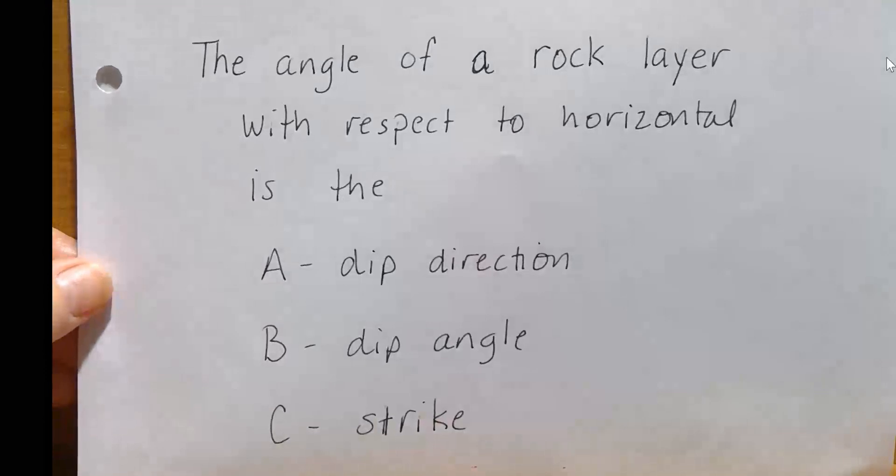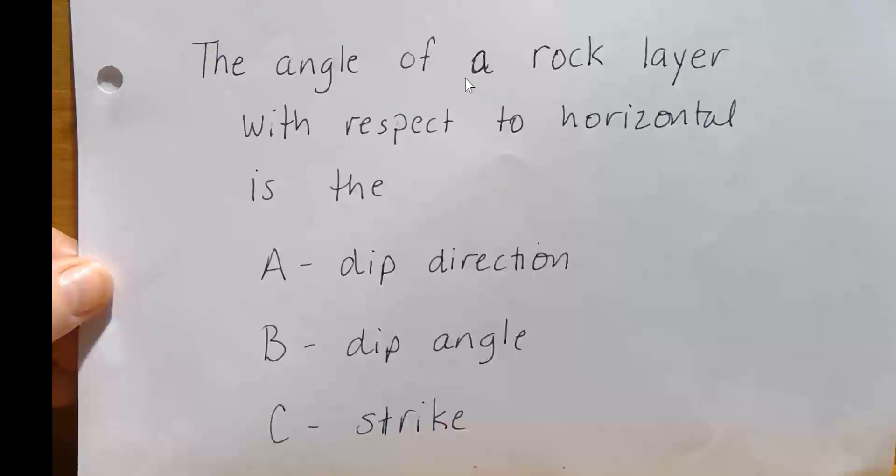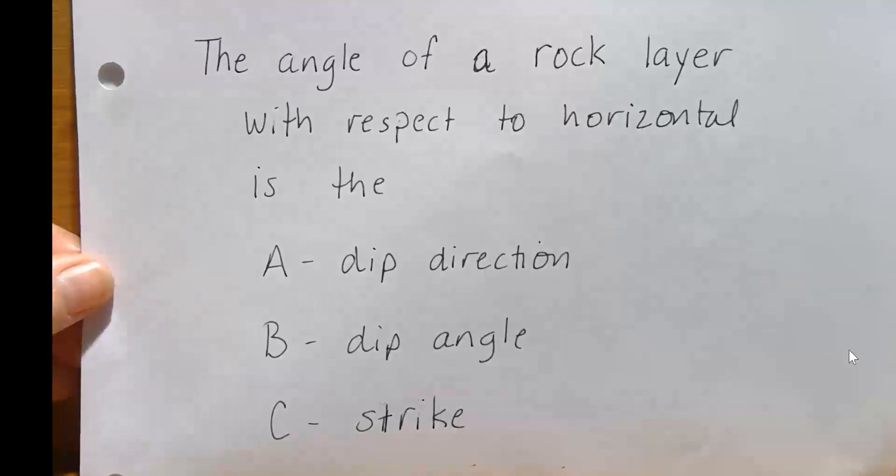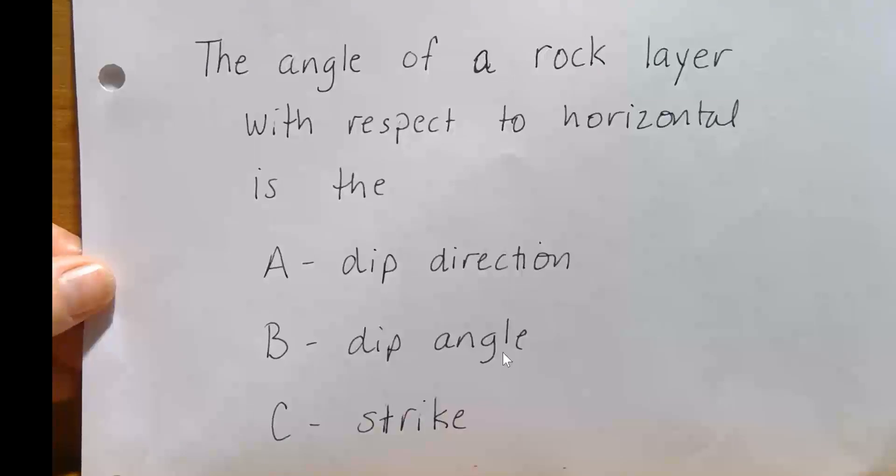Let's try this one. It says the angle of a rock layer with respect to horizontal is the dip direction, the dip angle, or the strike. You need to know this terminology with dip and strike. So what do you think? I hope you said dip angle. The dip angle is the angle that a rock is tilted with respect to horizontal.